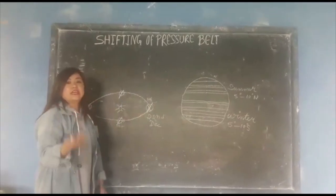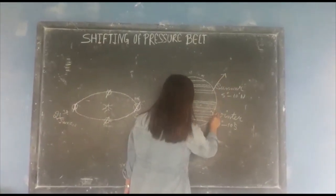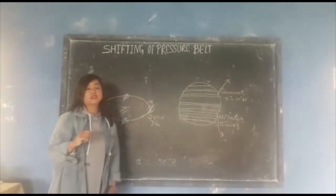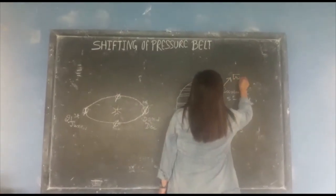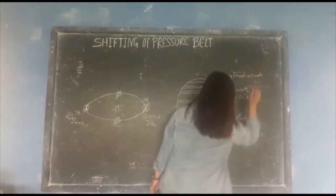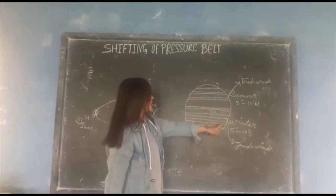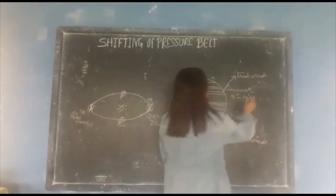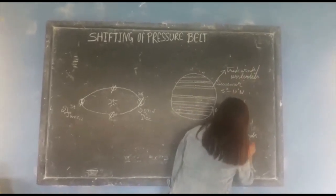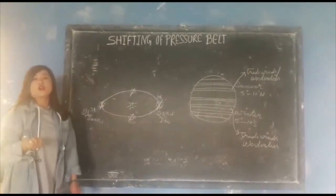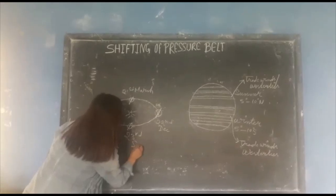The mostly affected region due to the shifting of pressure balance is the 30 to 40 degree north and south region, that is the subtropical high pressure belt. During summer season, in the subtropical high pressure belt — the 30 to 40 degree north and south region — this region will experience certain wind flow. Similarly, during winter season in the same region, that is 30 to 40 degree north and south, this region will also experience wind flow.